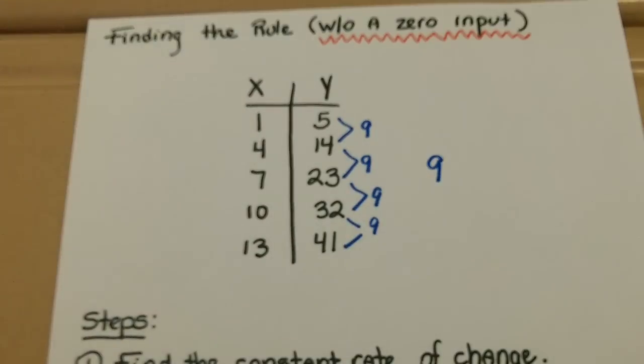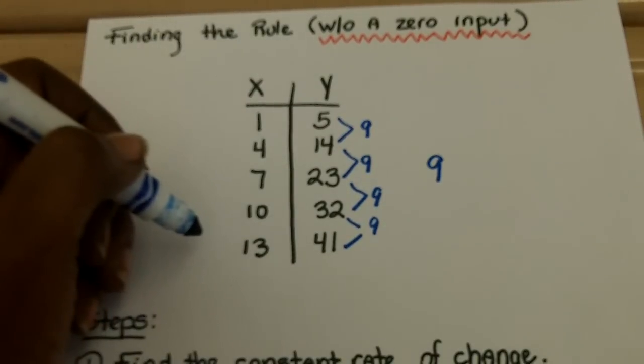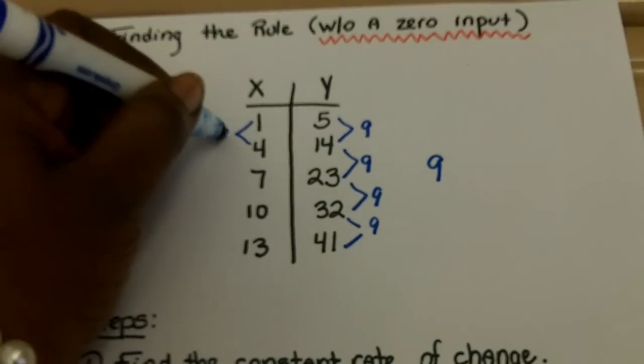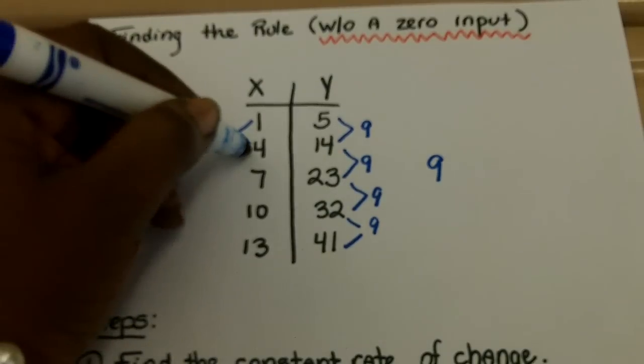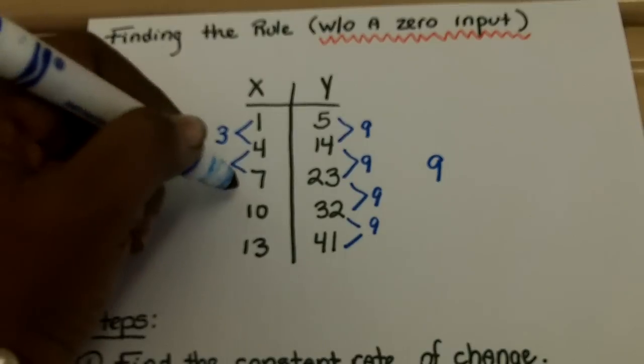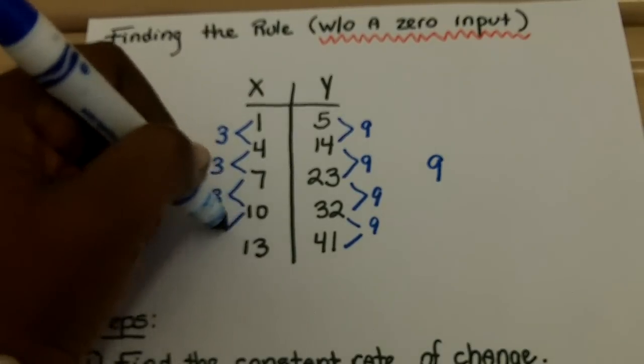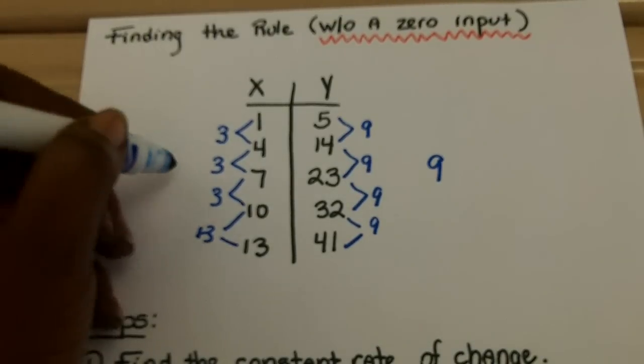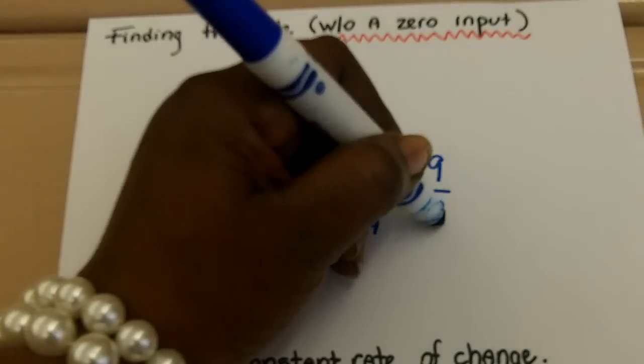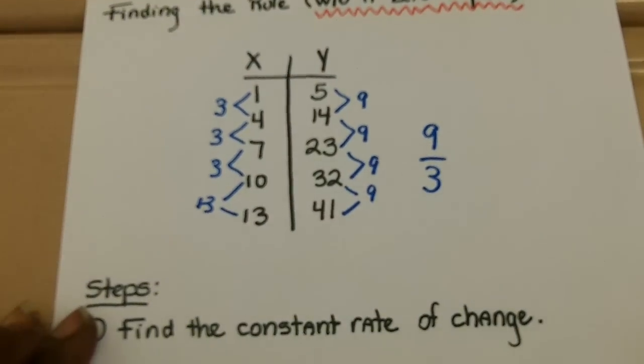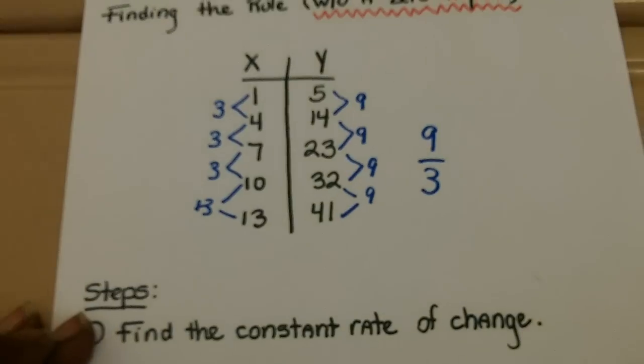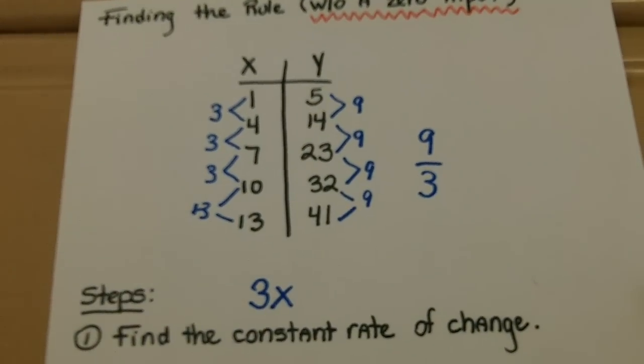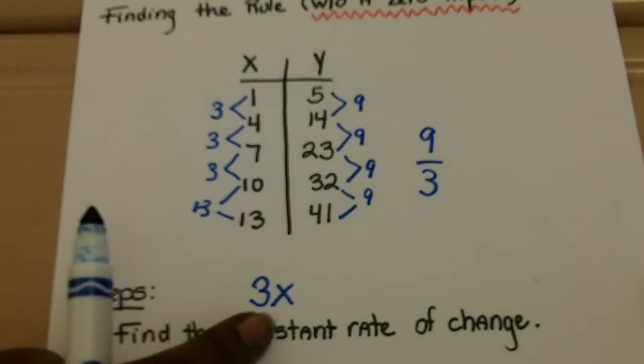We're going to come to the other side and find the change of the x. 1 to 4 looks like they increased by 3. 4 to 7 also increased by 3. 7 to 10 was 3. Test it with the last two. 10 plus 3 is, in fact, 13. So my change of x is 3. In order to get that constant rate of change, 9 divided by 3 is 3. And remember, that is what we're going to multiply by the inputs. So, so far, we have half of our rule, 3 times x.